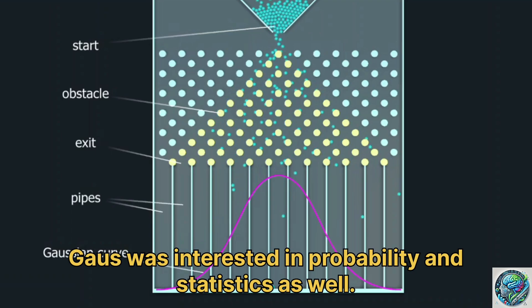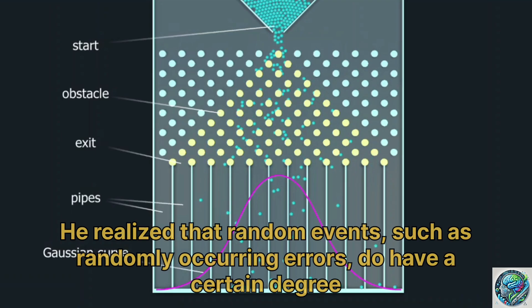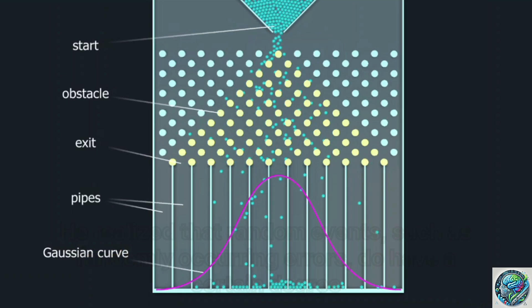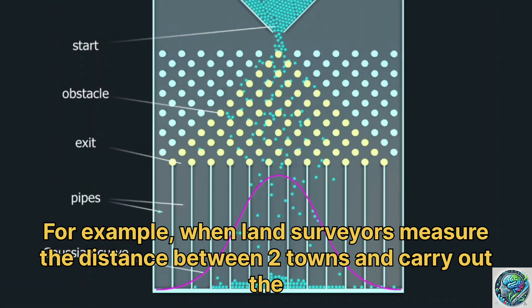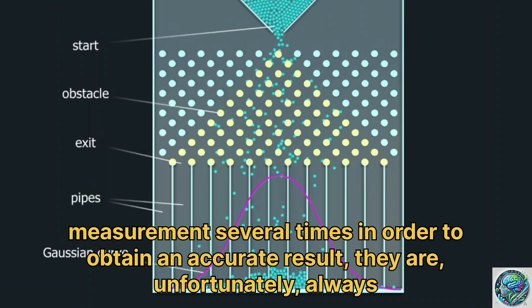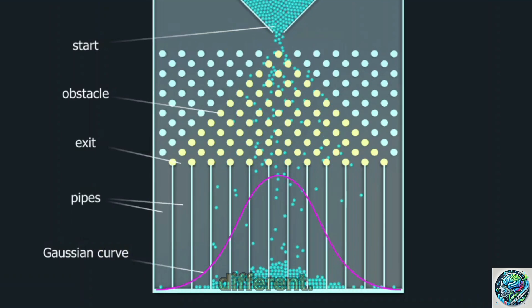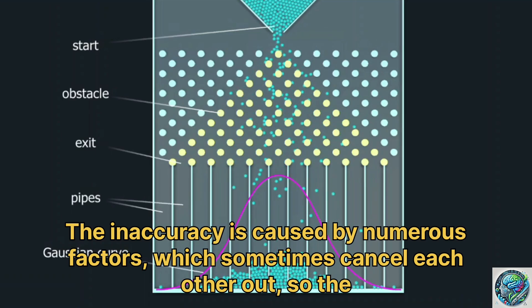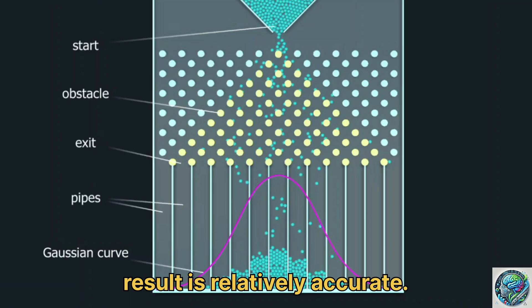Gauss was interested in probability and statistics as well. He realized that random events, such as randomly occurring errors, do have a certain degree of regularity. For example, when land surveyors measure the distance between two towns and carry out the measurement several times to obtain an accurate result, they are, unfortunately, always different. The inaccuracy is caused by numerous factors, which sometimes cancel each other out, so the result is relatively accurate.